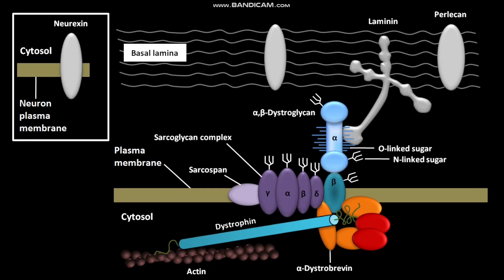Nitric oxide synthase, or NOS, produces nitric oxide, or NO, which is a gaseous signaling molecule. GRB2, or growth factor receptor-bound protein 2, is a component of the signaling pathway activated by certain cell surface receptors.